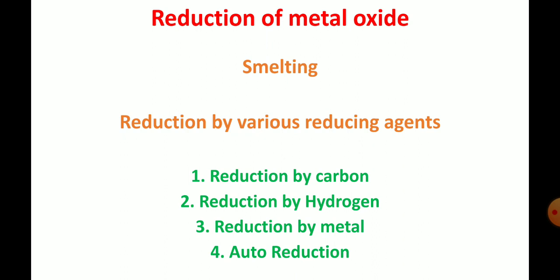For Step 2, we have 2 sub-steps. The extraction of crude metal involves 2 steps. Step 1 is conversion of the concentrated ore into its metal oxide, for which there are 2 processes: roasting and calcination. Then the second sub-step is the reduction of metal oxide, which means the metal oxide has to be converted into metal. That part we are going to discuss now.